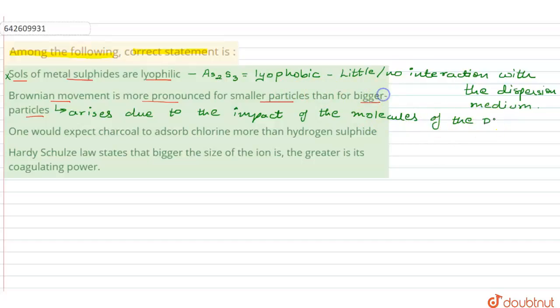The Brownian movement arises due to the impact of the molecules, due to the impact of the molecules of the dispersion medium with the colloidal particles.